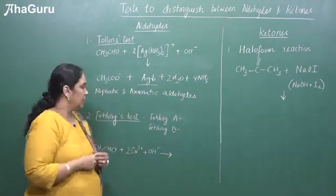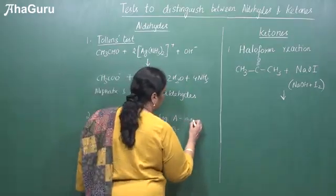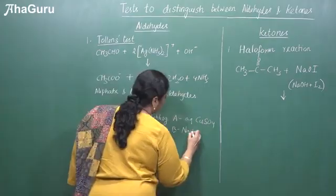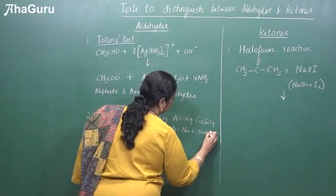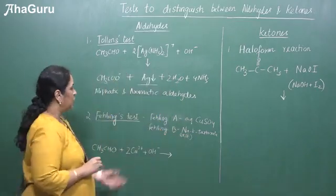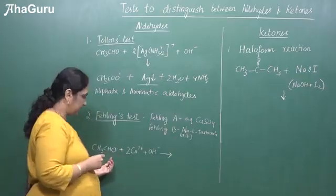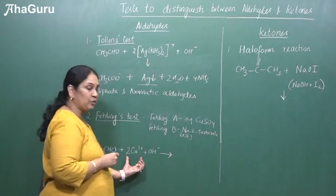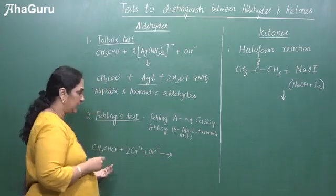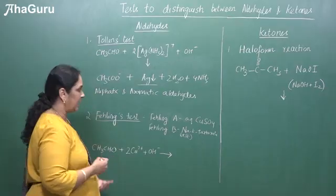Next is Fehling's test. Here you have two solutions: Fehling's A and Fehling's B. Fehling's A is an aqueous solution of copper sulfate, and Fehling's B is sodium potassium tartrate — an alkaline solution also called the Rochelle salt. We prepare these separately, then add them to the aldehyde. I have taken acetaldehyde. Fehling's solution is also a mild oxidizing agent, so it will oxidize the aldehyde to the acid.